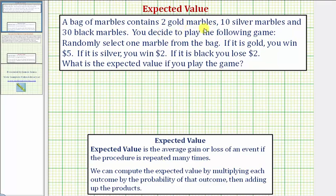A bag of marbles contains two gold marbles, 10 silver marbles, and 30 black marbles. You decide to play the following game: randomly select one marble from the bag. If it is gold, you win $5. If it is silver, you win $2. If it is black, you lose $2. What is the expected value if you play the game?